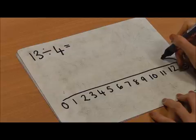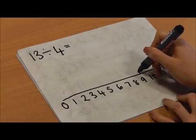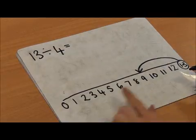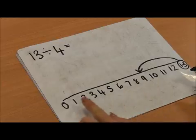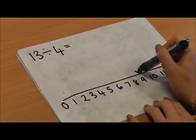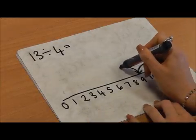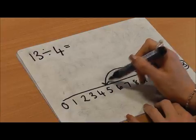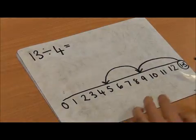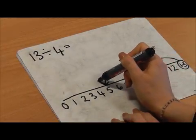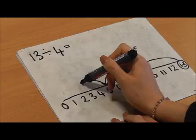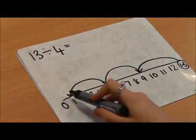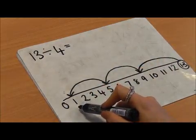1, 2, 3, 4. I need to get as close as I can to 0. Counting back in groups of 4: 1, 2, 3, 4. 1, 2, 3, 4. I can't get another group of 4 out.